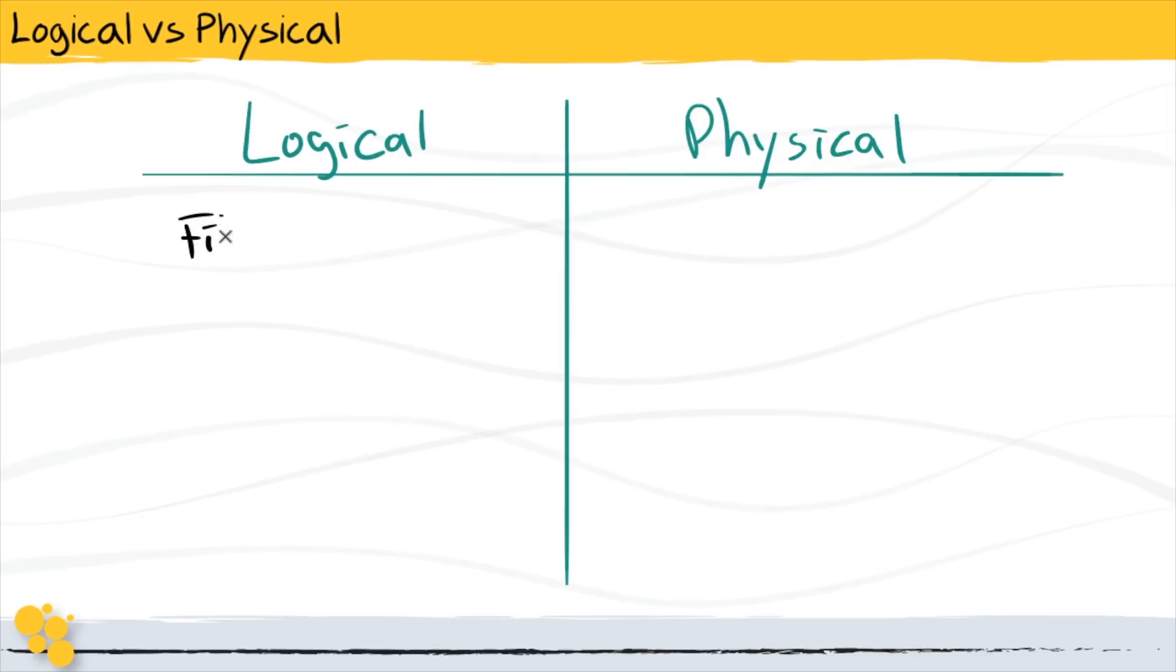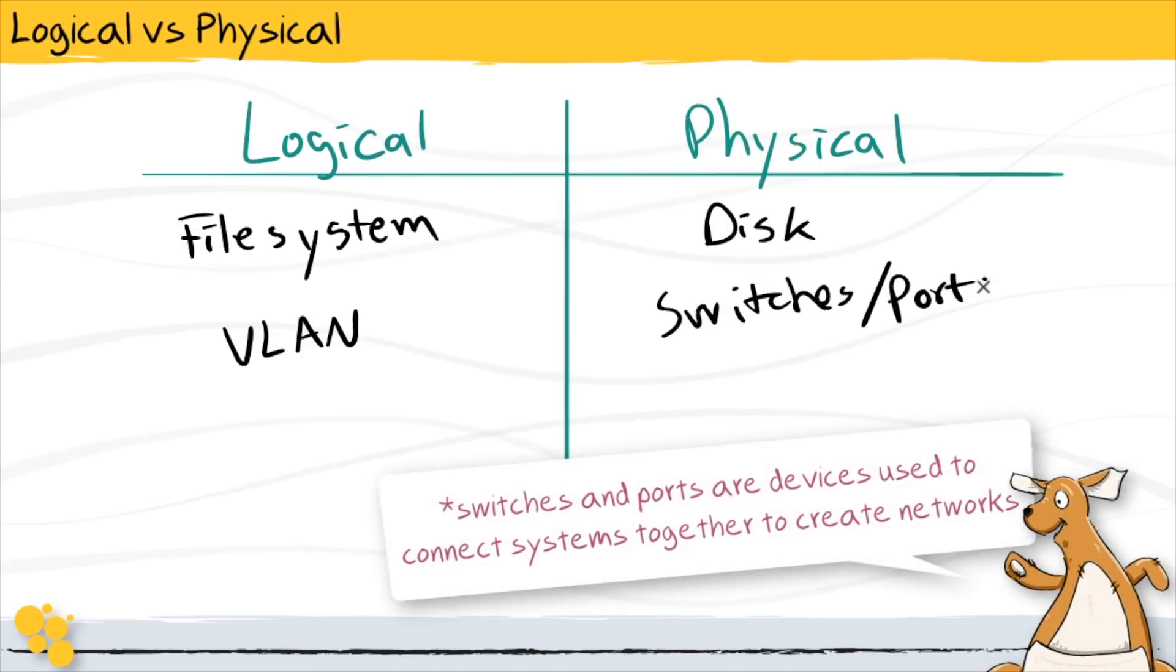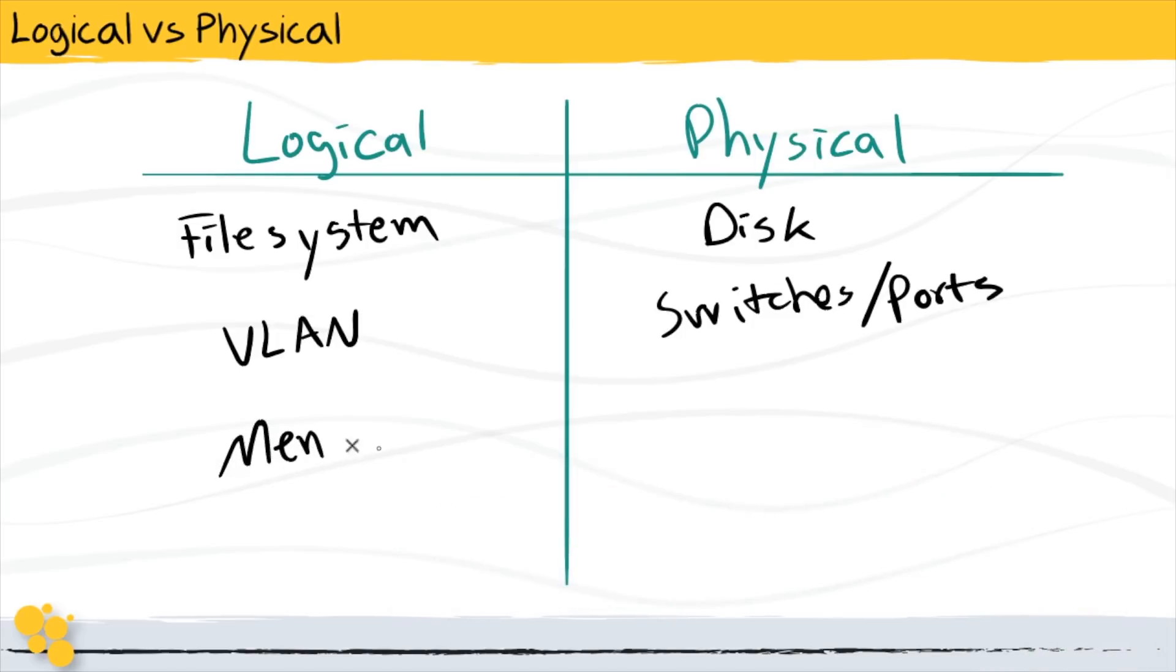All right, so let's go a little bit farther here. Just a moment ago you heard me talking about how a file system was a logical representation of some sort of physical disk in the background. Getting a little more technical, in the world of networking there is such a thing called a virtual local area network, that is a logical type of construct that lives on top of physical switches and ports.